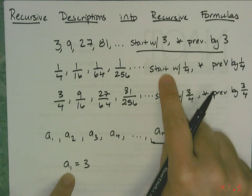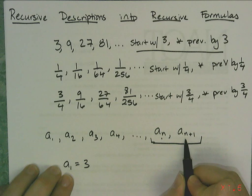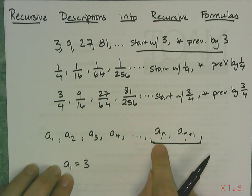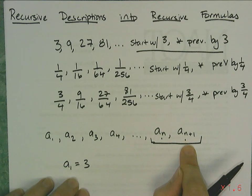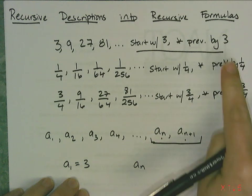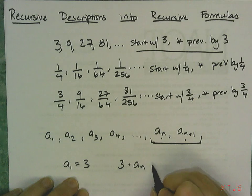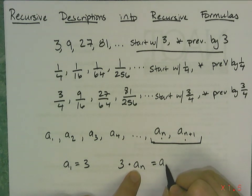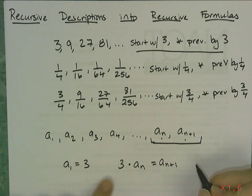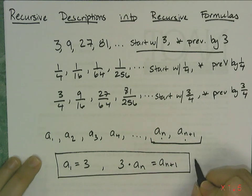I need to find a term and its previous term, but it has to be general. So I'm going to use aₙ and aₙ₊₁. aₙ is the previous term and aₙ₊₁ is the next term. The rule says take the previous term, which is aₙ, and multiply it by 3. So I'm going to multiply it by 3. And what does that equal? It's going to equal the next term, aₙ₊₁.